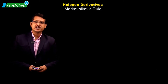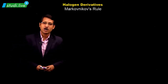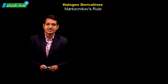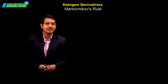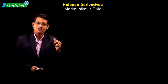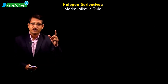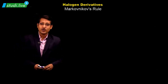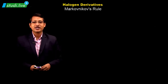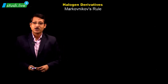Hello students, welcome to Study Live. In the previous video we discussed the method of preparation of alkyl halides from alkenes, and we left a question asking why 2-bromopropane is the major product and 1-bromopropane is the minor product for the reaction we discussed. So we will continue to answer that question. The answer is given by the topic of Markovnikov's rule.